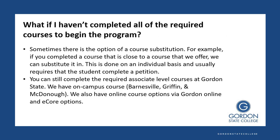What happens if you haven't completed all the required courses to begin the program? Sometimes we have the option of a course substitution. That happens when you took a similar course at another institution that is very similar to one required here at Gordon State, and we can substitute it in. This is set on an individual basis and requires that the student complete a petition. You can also complete the other associate level courses here at Gordon State.